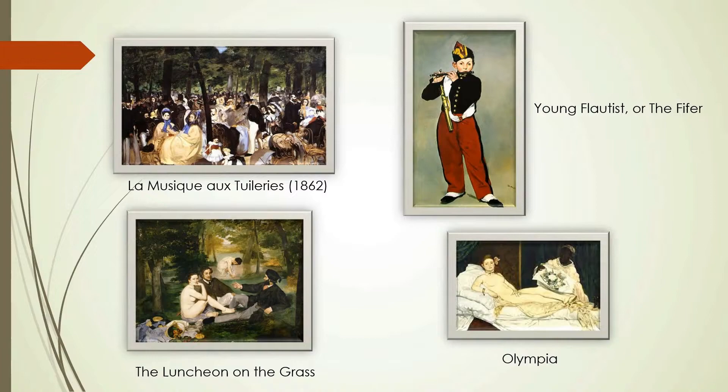In 1856, Manet opened a studio. His painting style in this period was characterized by loose brush strokes, simplification of details, and the suppression of transitional tones. Adopting the realism of Gustave Courbet, he painted subjects such as beggars, singers, gypsies, people in cafes, and bullfights.